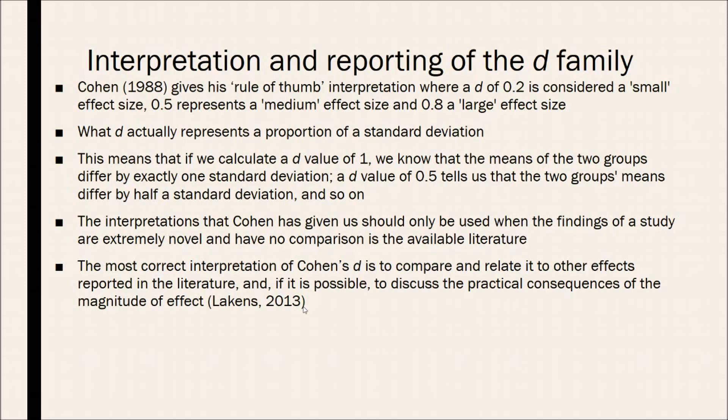The interpretation that Cohen has given us should only be used when the findings of a study are extremely novel and have no comparison available in literature. The primary way of comparing effect sizes and the strength of your effect size is to compare it to other findings in literature, because you may find that a small effect size, while not statistically significant, has a very large practical significance. The most correct interpretation of Cohen's D is to compare and relate it to other effect sizes reported in literature, and if possible, to discuss the practical consequences of the magnitude of effect.